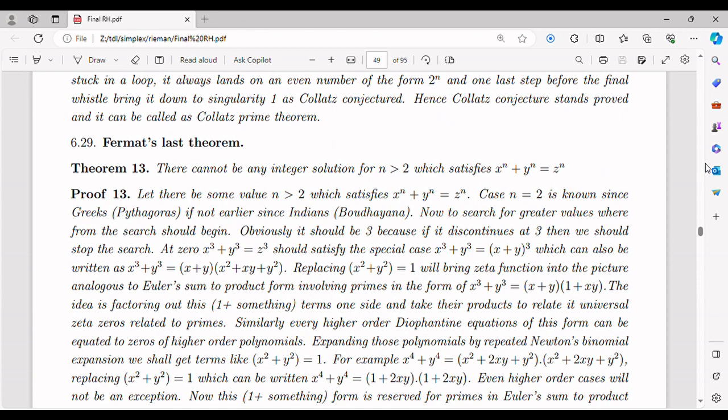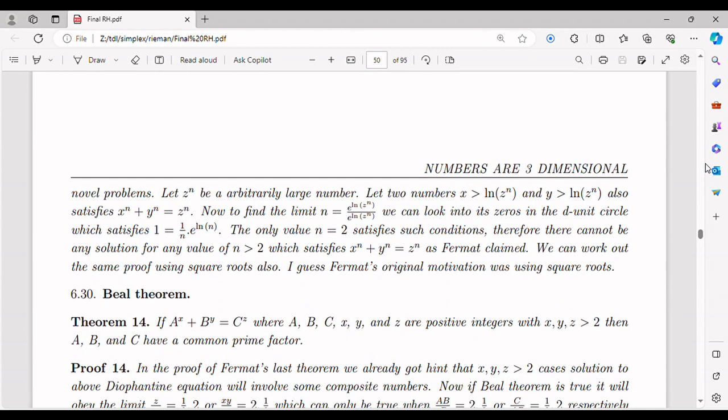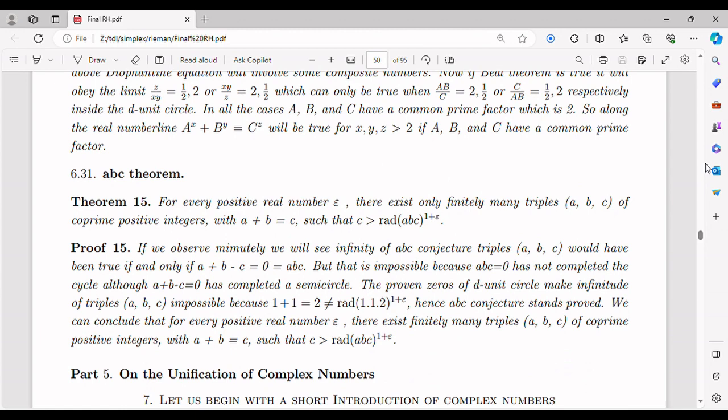The fine structure constant, denoted by alpha, is a fundamental constant in physics that characterizes the strength of the electromagnetic interaction between charged particles. It has a value close to 1 upon 137. The fine structure constant is dimensionless and plays a crucial role in various areas of physics, including quantum electrodynamics.